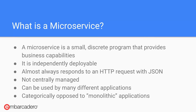So what is a microservice? Now that you know about REST and JSON — a microservice is a small, discrete program that provides business capabilities. It's often a REST API that will provide a small chunk of information about your business. For instance, you might have an employee microservice that tells you information about your employees and that's it. It doesn't talk about the employee's projects. You can ask information about the employee using the REST API and get that information back.